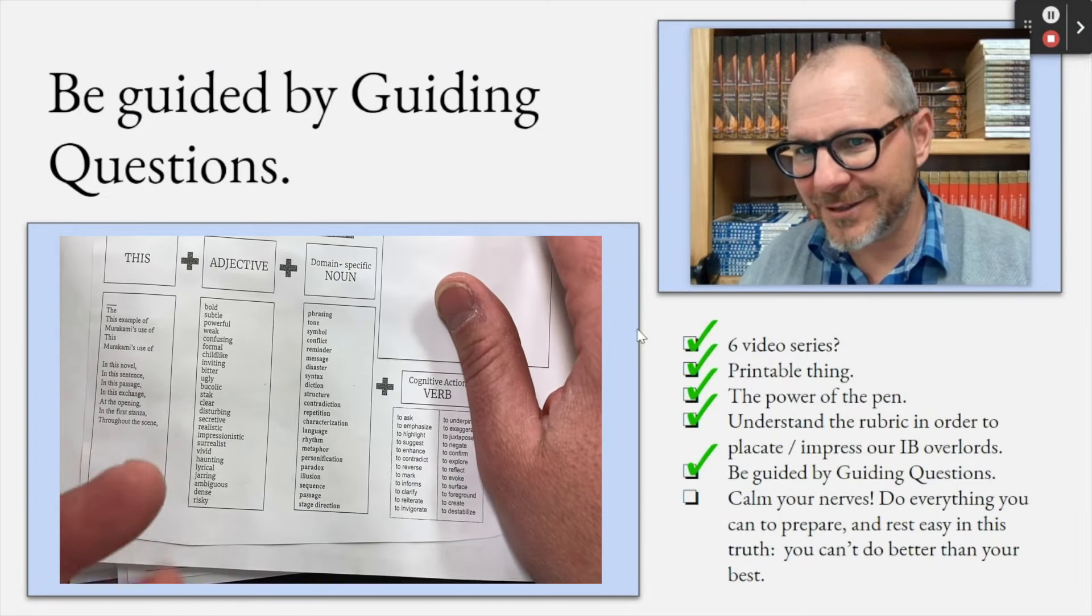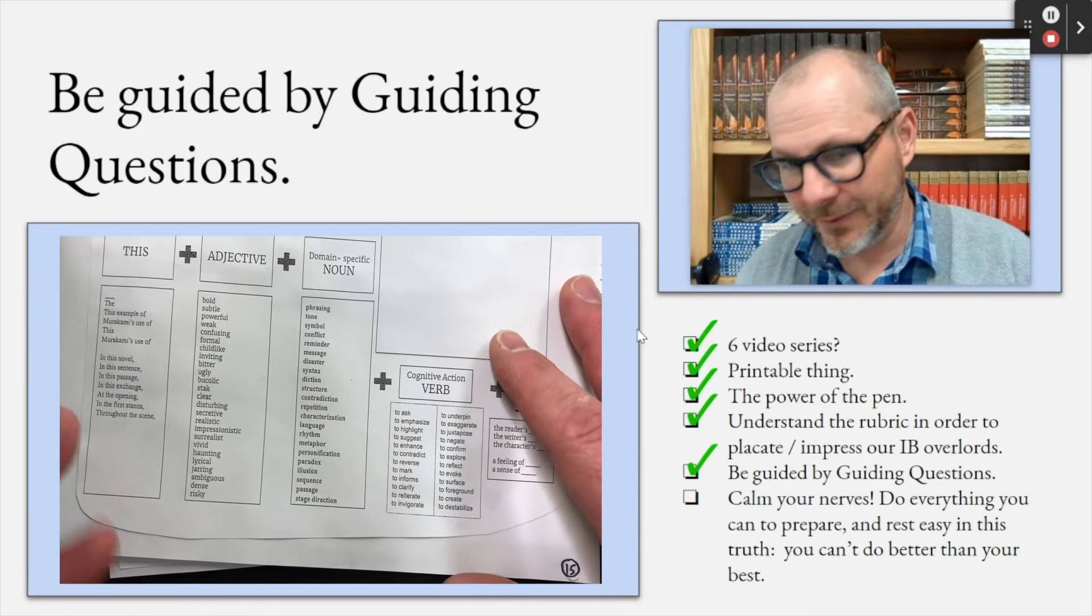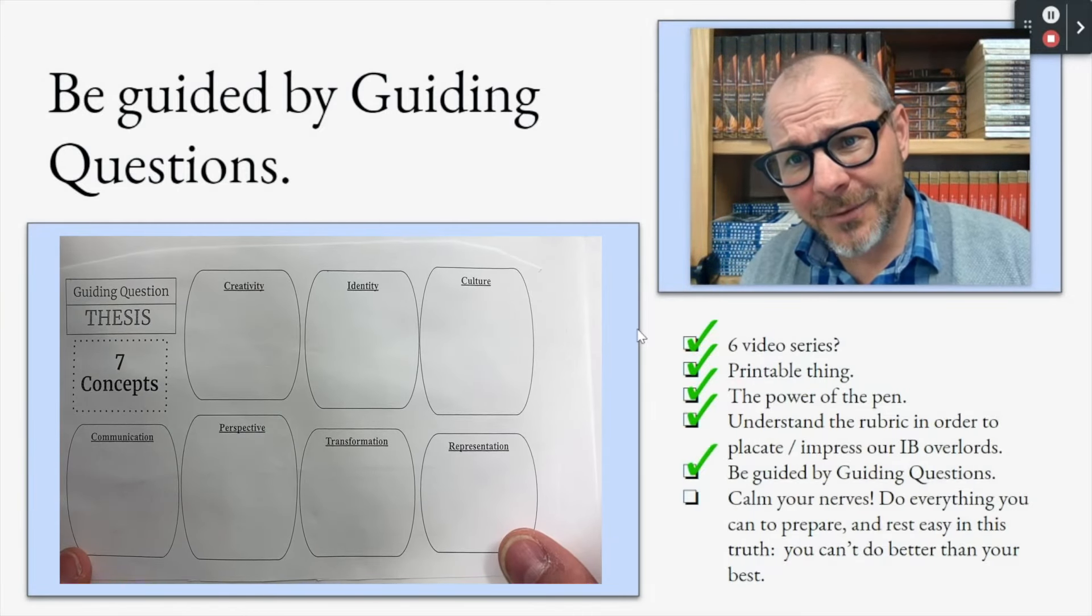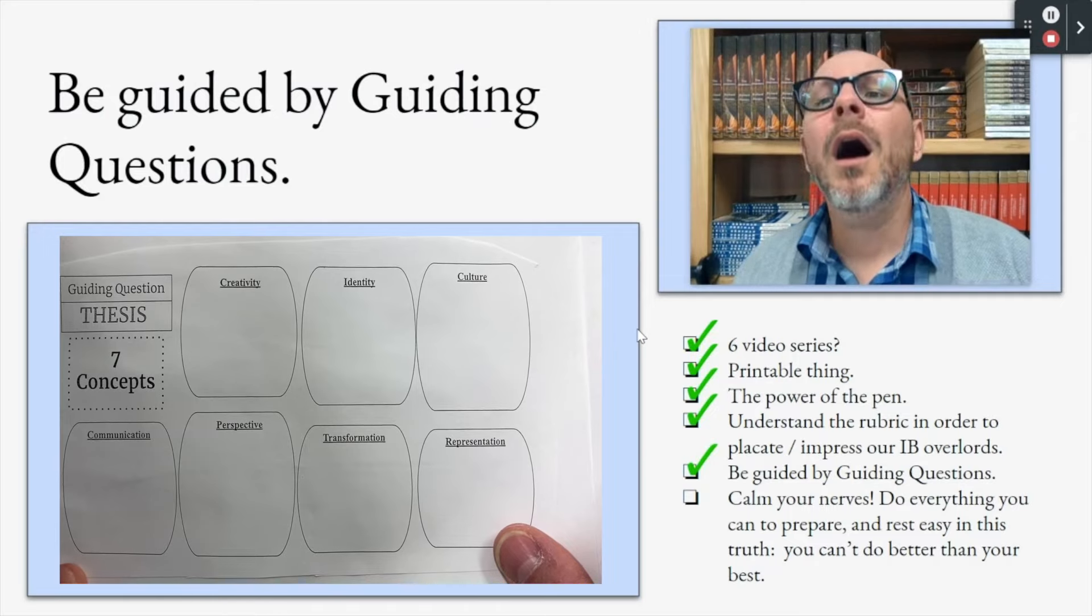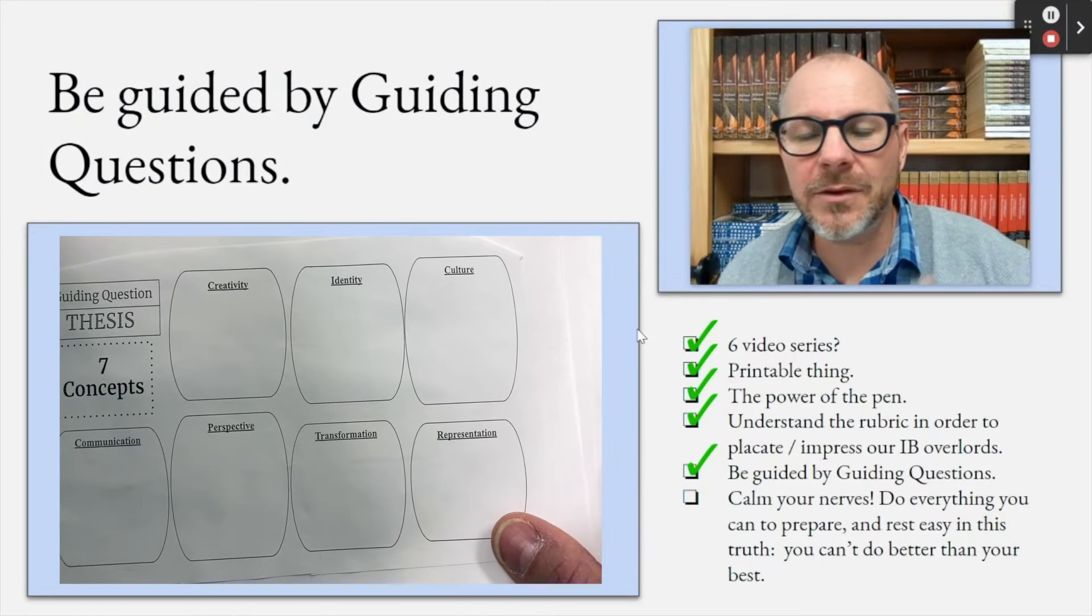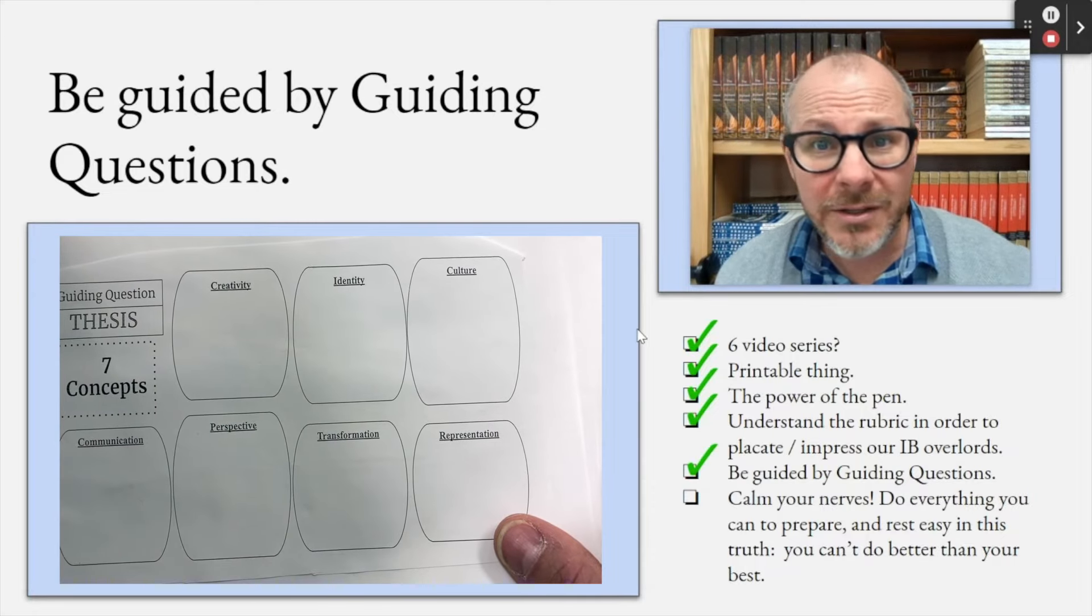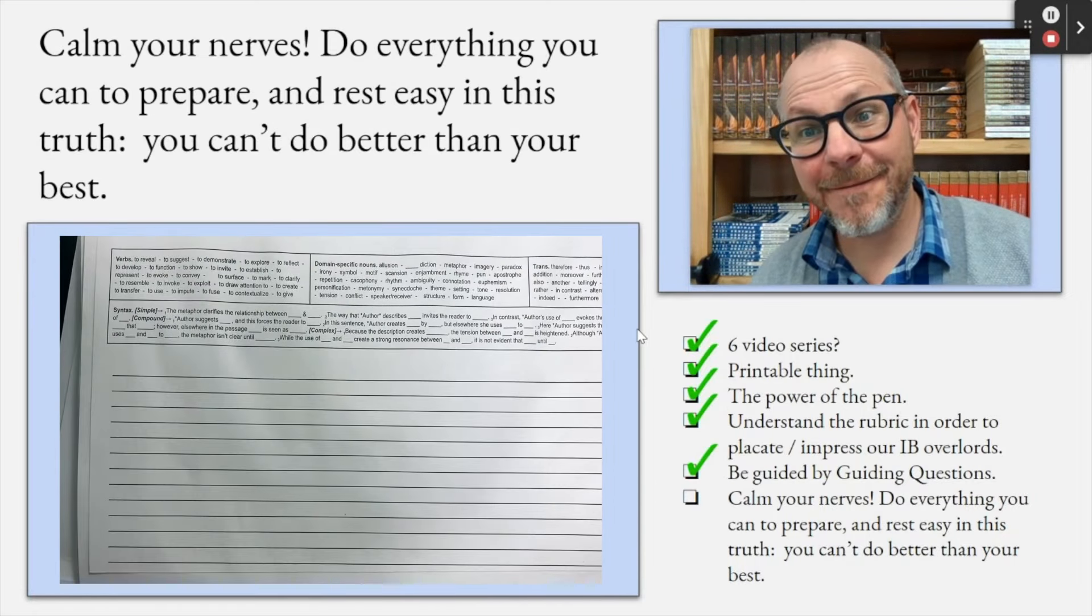What else is in here? This is in here. I think this is really helpful. I'm going to explain it. It probably doesn't make any sense to you. Seven concepts, and your paper number one, of course, your thesis statement that you developed might have something to do with transformation, or perspective, or creativity, so I'm going to talk about all those things.